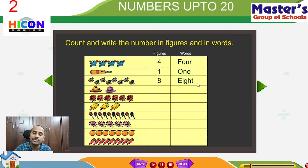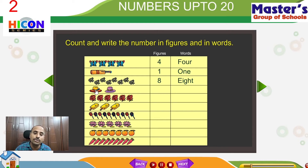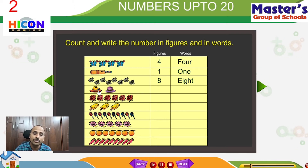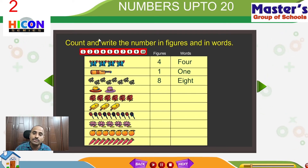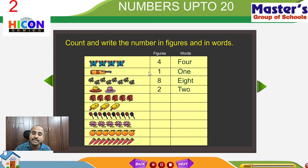See the fourth set of pictures. The fourth set has caps — beautiful caps. How many caps are there? There are 2 caps total: this is the first cap, this is the second cap. So the number is 2, and in words we write T, W, O — two.